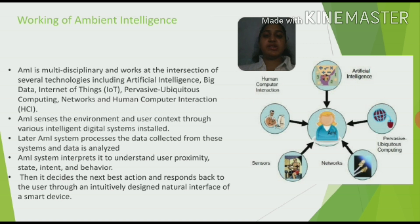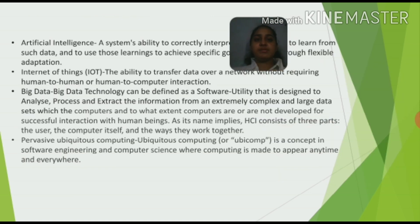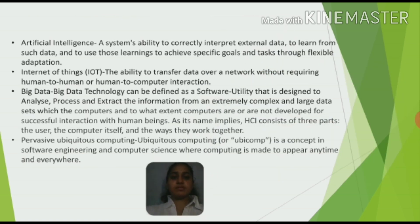Let's discuss the technologies in detail. Artificial intelligence: a system's ability to correctly interpret external data, to learn from such data, and to use those learnings to achieve specific goals and tasks through flexible adaptation. IoT: ability to transfer data over a network without requiring human-to-human or human-to-computer interaction.